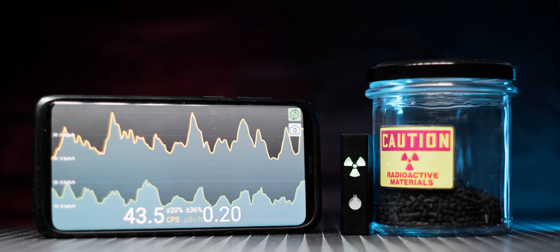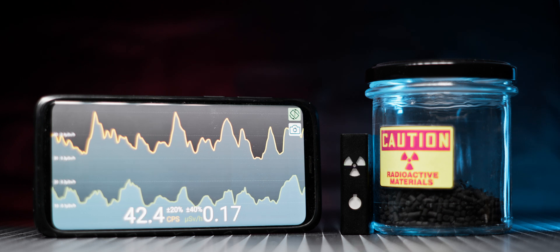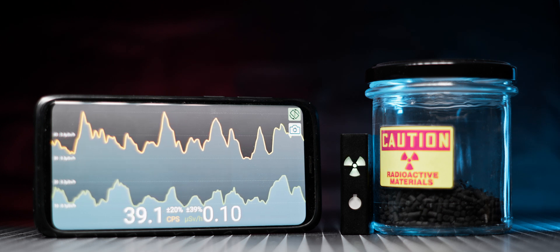The gamma dose rate is barely above background, and my detector registers an increase of about 10 counts per second when placed right next to the jar.